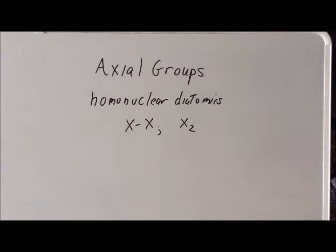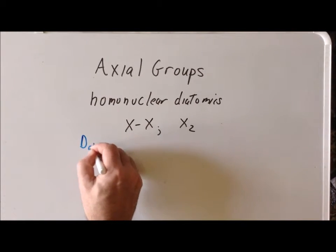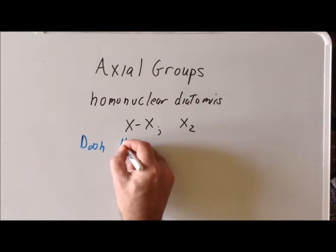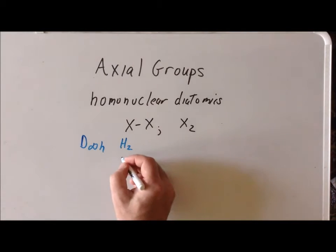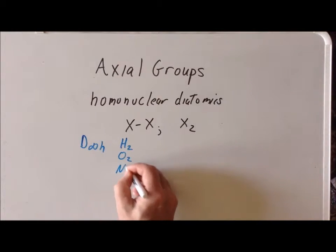All of these types of molecules we recognize right away as belonging to the point group D∞h. Important examples would be hydrogen, H2; oxygen, O2, as dioxygen; and the very important gas nitrogen, N2.